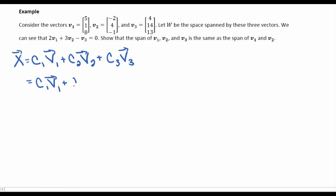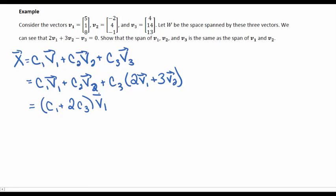Well, I can rewrite V3 as 2V1 plus 3V2 because of this equation that's given in the problem. We can regroup things to get (C1 plus 2C3)*V1 plus (C2 plus 3C3)*V2. So now, this is in the span of V1 and V2.